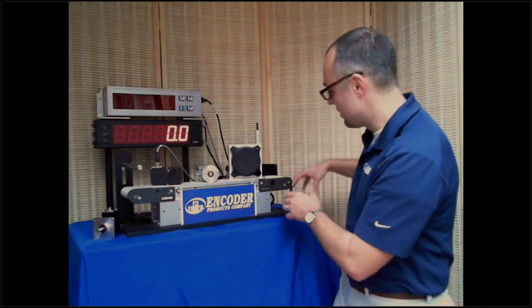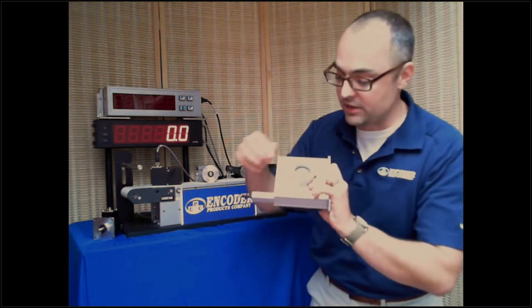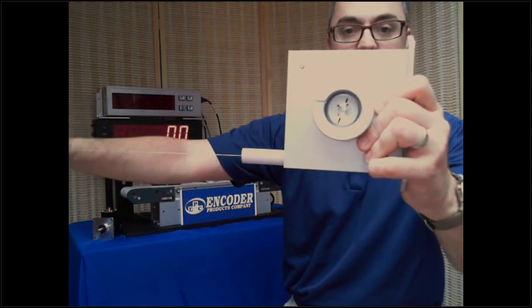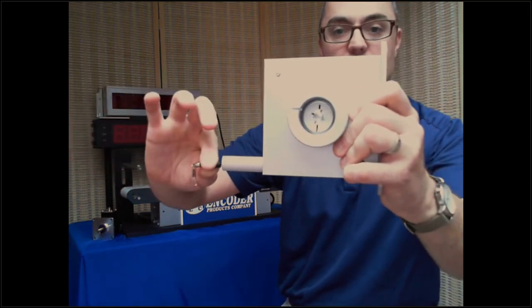If you look at our model LCX here, you can actually see when I pull this wire and rotate it, you can see that it's rotating the hub that the encoder shaft would mount to.